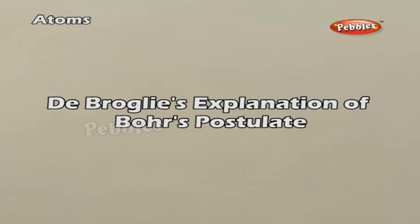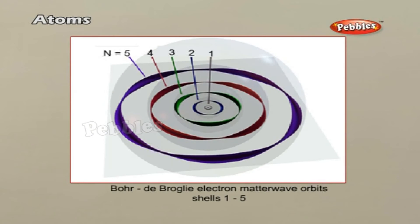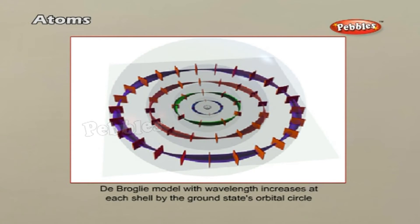De Broglie's explanation of Bohr's postulate: Louis de Broglie postulated that the electron in its circular orbit, as proposed by Bohr, must be seen as a particle wave, in analogy to waves travelling on a string. Particle waves, too, can lead to standing waves under resonant conditions.